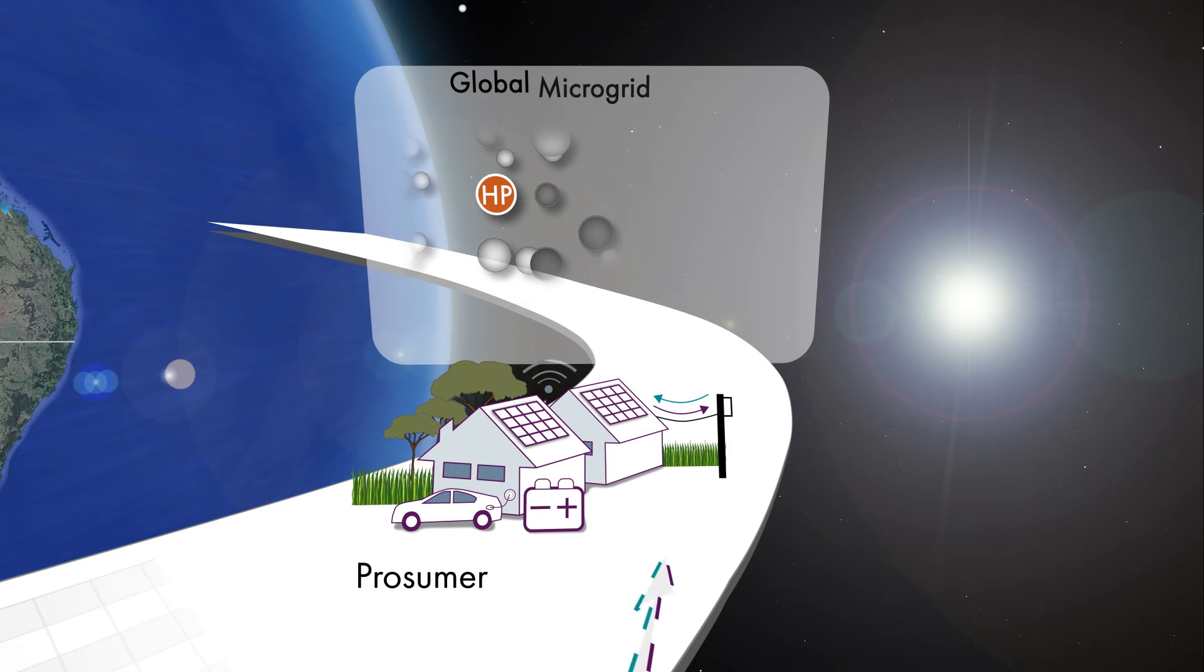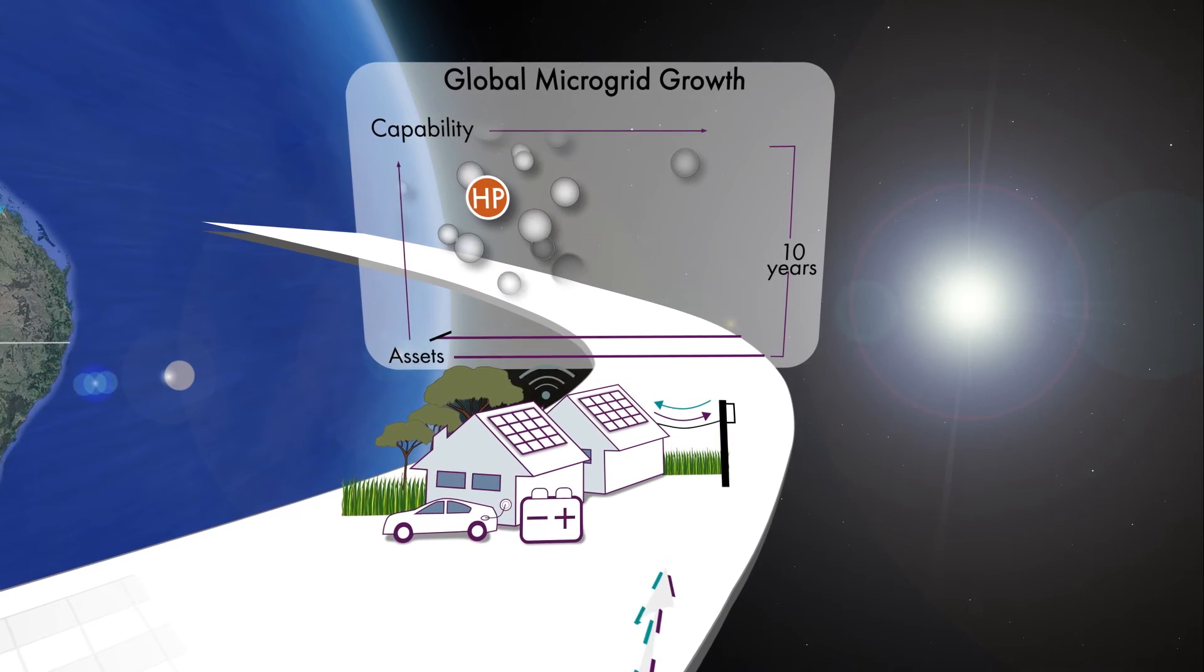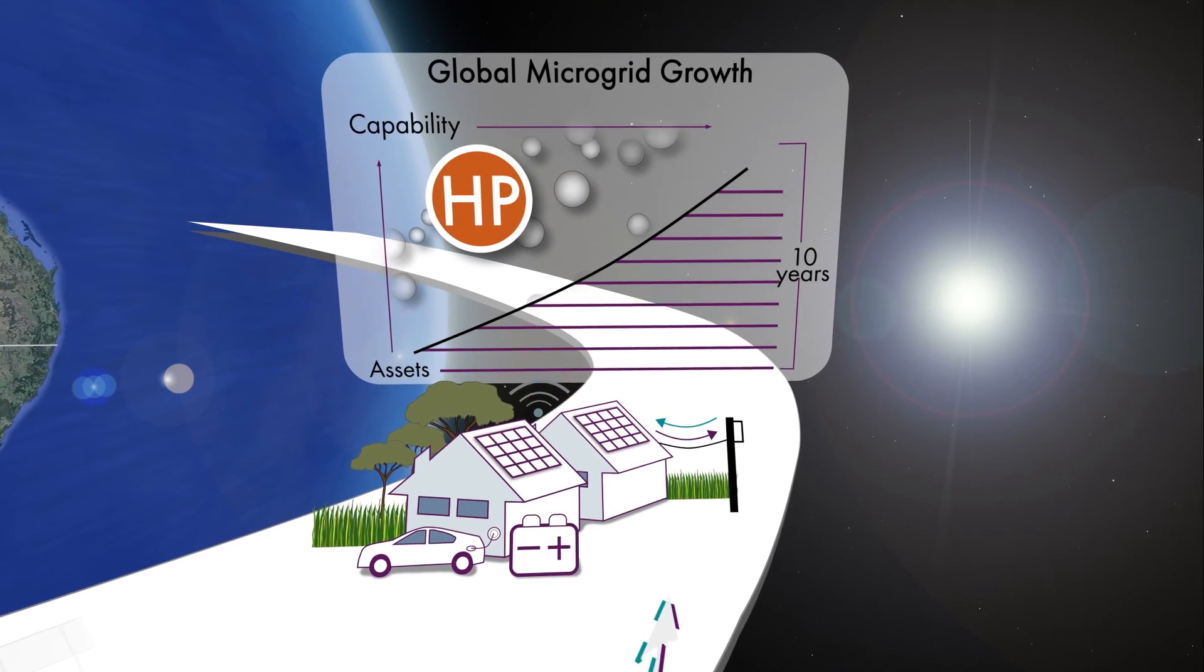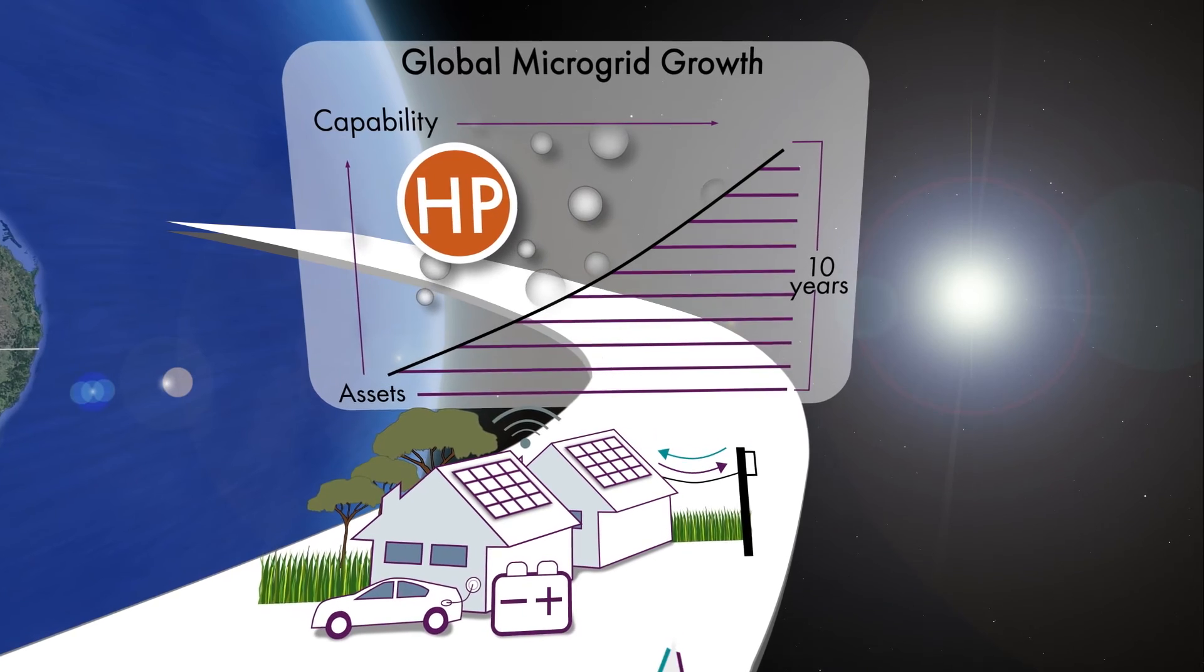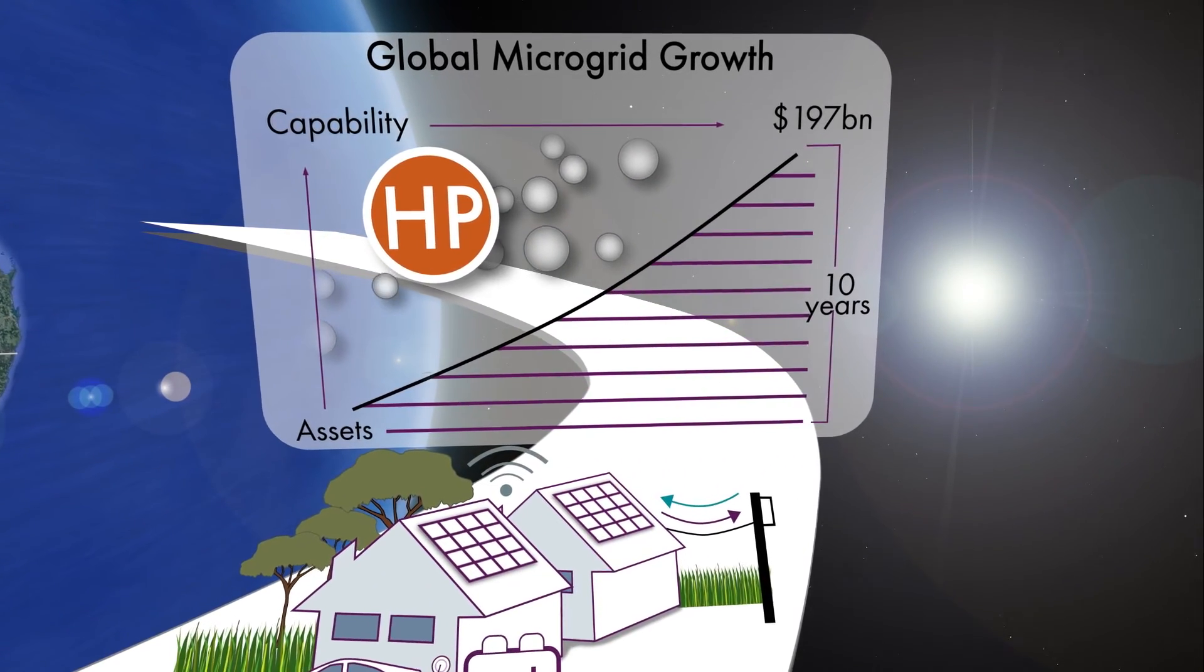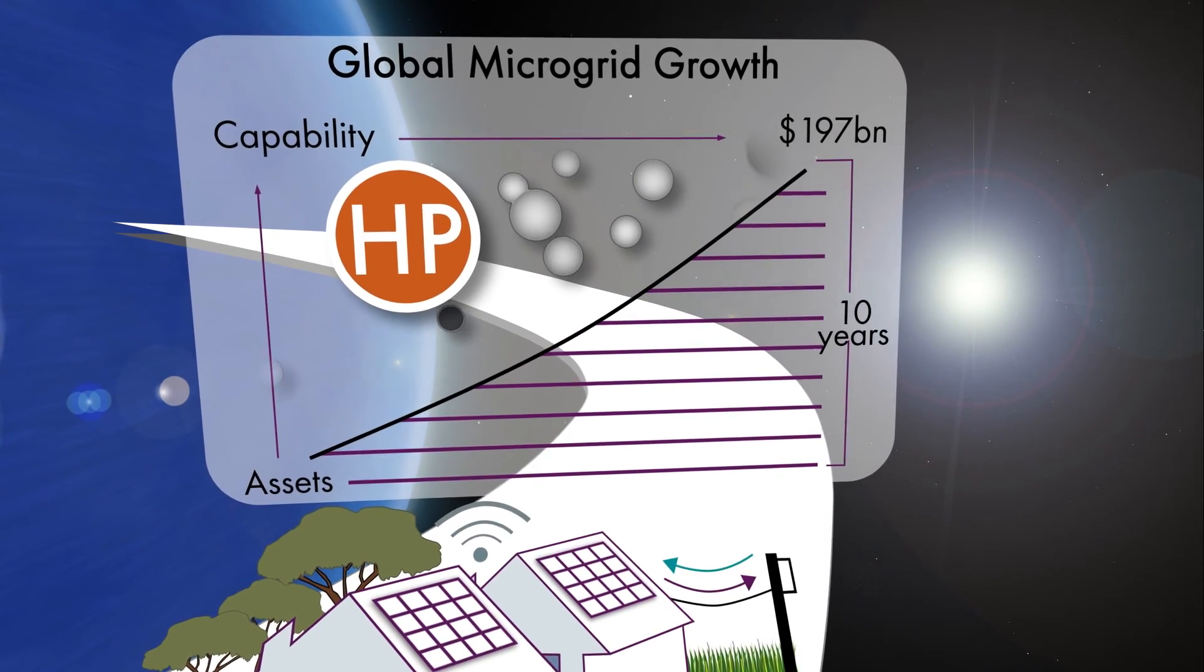The global remote microgrid market is expected to increase to over $20 billion annually by 2024, at a compound annual growth rate of 17.4%. This represents cumulative revenue of $197 billion in 10 years' time. The Asia-Pacific represents 40% of this global remote microgrid market.